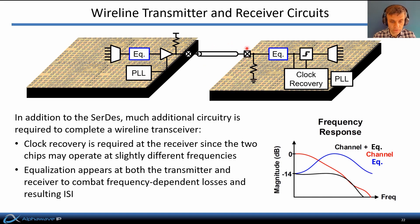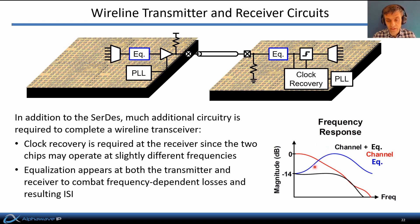Moreover, in order to combat the frequency-dependent losses of the channel, discontinuities, and the resulting intersymbol interference, equalization circuits generally appear at both the transmitter and the receiver. The channel exhibits the frequency-dependent losses shown here in red, and these equalization circuits exhibit a frequency response that counters that, so that the series combination results in a flattened or equalized channel response over the entire bandwidth of interest.